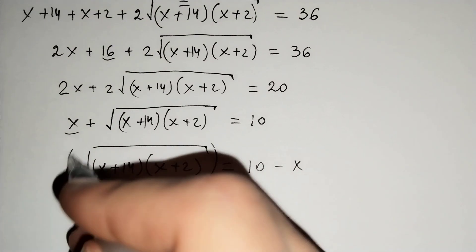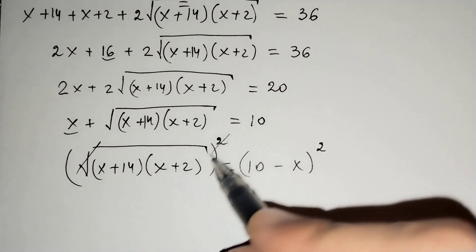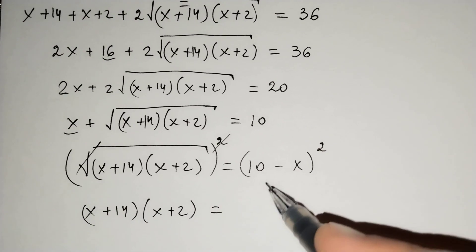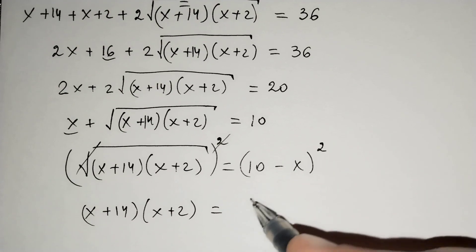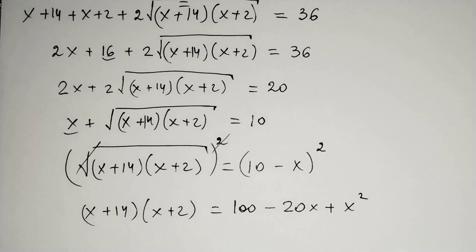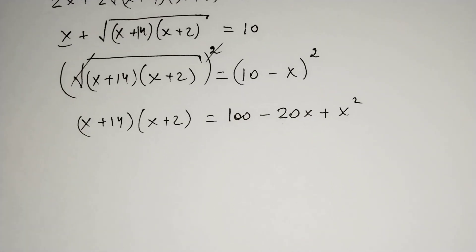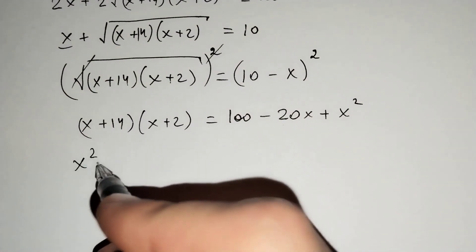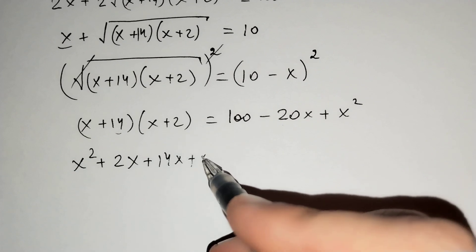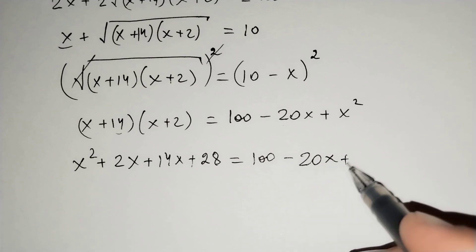Then we raise both sides to the second power. On the left side, (x plus 14)(x plus 2) remains. On the right side, (10 minus x)² expands to 100 minus 20x plus x². Expanding the left side gives x² plus 16x plus 28 equals 100 minus 20x plus x².